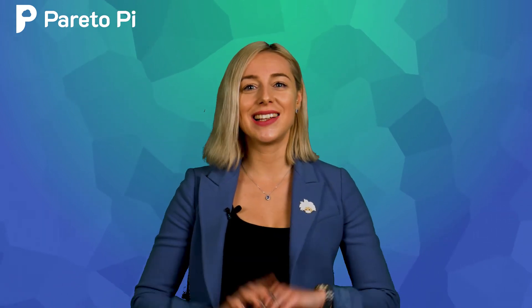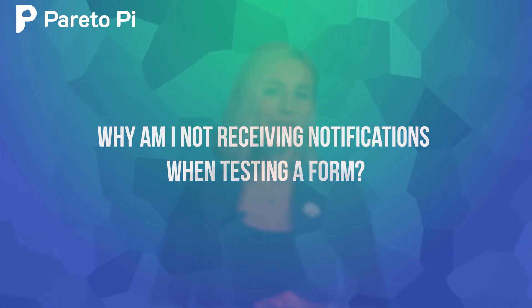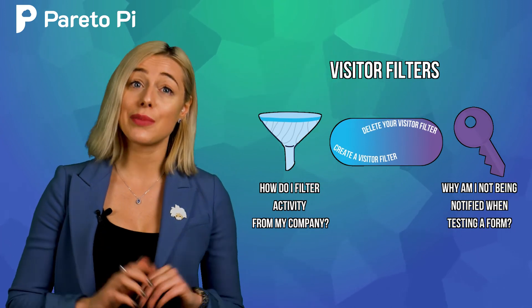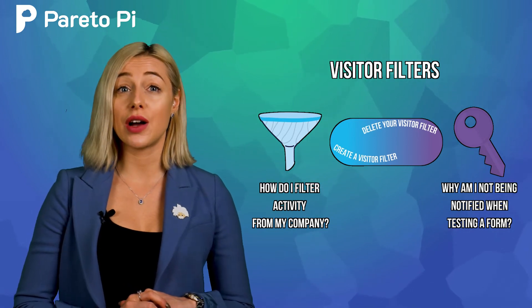There is a flip side of the coin. The next question is: why am I not receiving notifications when I'm actually testing a form? If you have previously set up a visitor filter for your IP address or domain, your activity will be filtered out. So whenever you're trying to do any tests and nothing seems to be happening, go to your visitor filters and check if your specific IP address is already there, then remove it so you can properly test all notification filters.